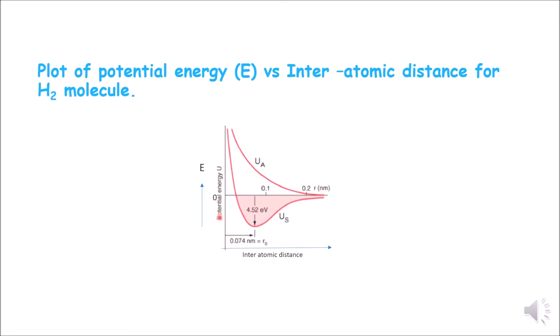Here you can see a graph where we have two hydrogen atoms. When they are far apart from each other, when the interatomic distance is maximum, there is no attraction and no repulsion, and the potential energy is zero. When they start coming close to each other, their potential energy continuously decreases.